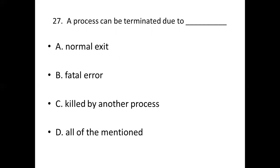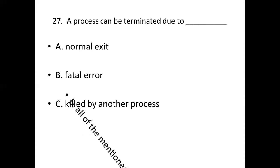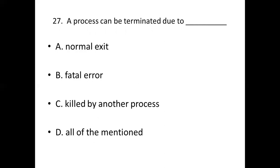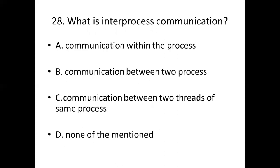Twenty-seventh bit: A process can be terminated due to dash. Option A: Normal exit. Option B: Fatal error. Option C: Killed by another process. Option D: All of them mentioned. Answer: Option D, all of them mentioned.